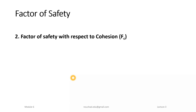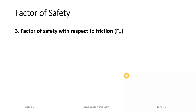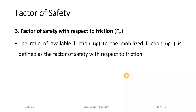The factor of safety with respect to cohesion, Fc, is the ratio of available cohesion to mobilized cohesion: Fc = C / Cm. The factor of safety with respect to friction, Fφ, is the ratio of available friction to mobilized friction: Fφ = tan φ / tan φm.